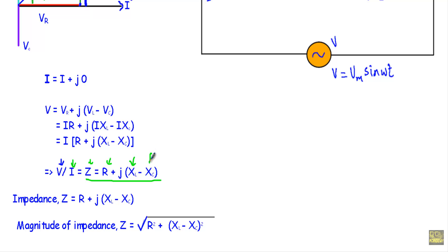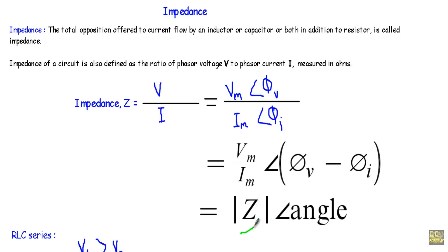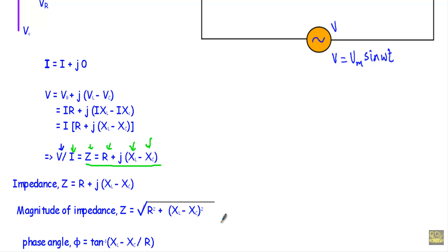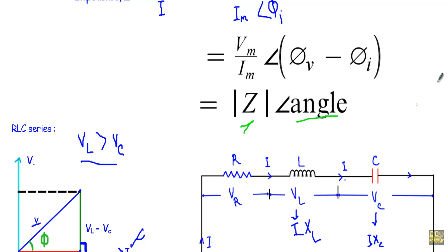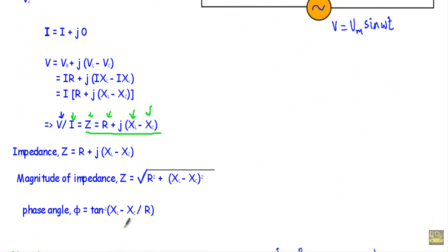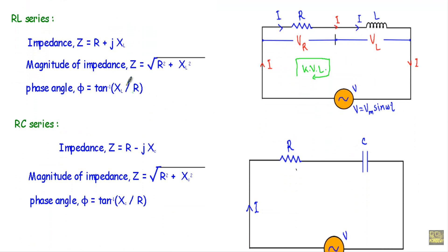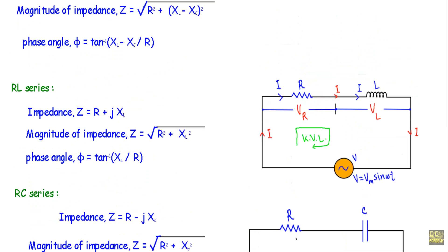The impedance Z equals R + j(XL − XC). The magnitude of the impedance is |Z| equals √(R² + (XL − XC)²), and the phase angle of the impedance is φ equals tan⁻¹((XL − XC)/R).